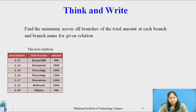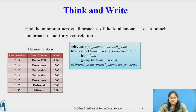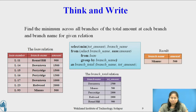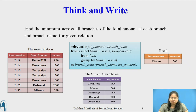I hope all of you have completed this activity. The query is: SELECT MIN(total_amount), branch_name FROM (SELECT branch_name, SUM(amount) FROM loan GROUP BY branch_name) AS branch_total(branch_name, total_amount). The relation branch_total is the result of the subquery in the FROM clause, which finds the total balance at each branch. The result is the minimum across all branches. The fifth tuple contains the minimum balance 500 for the branch name Mianus, hence this tuple is in the final result.